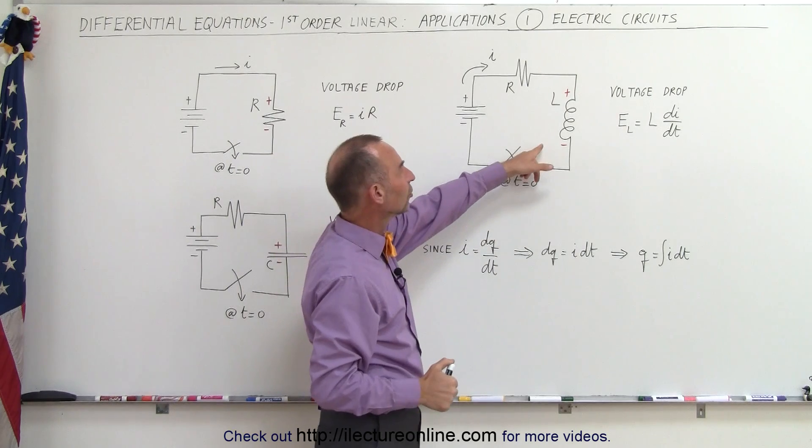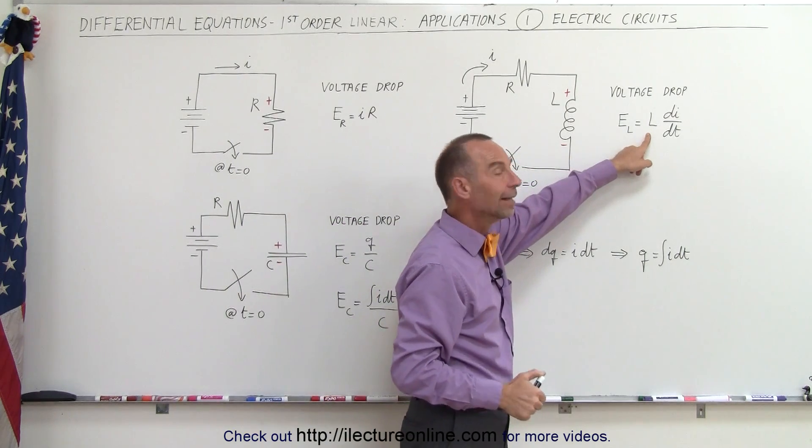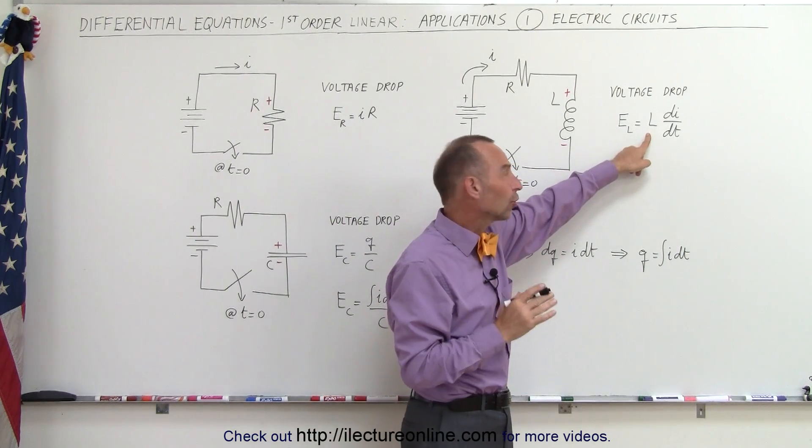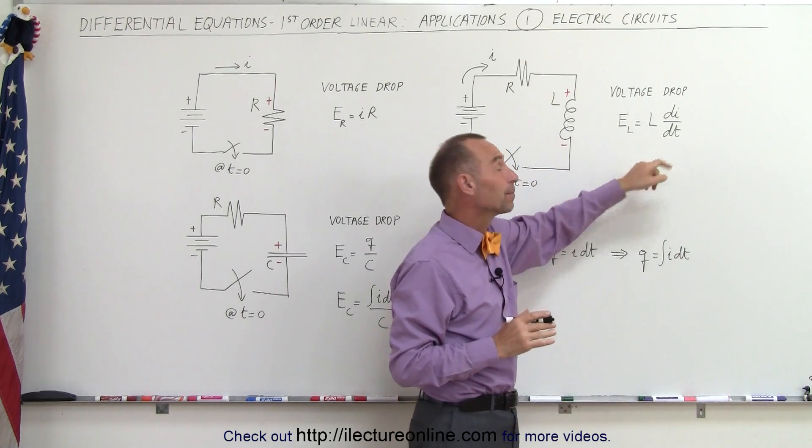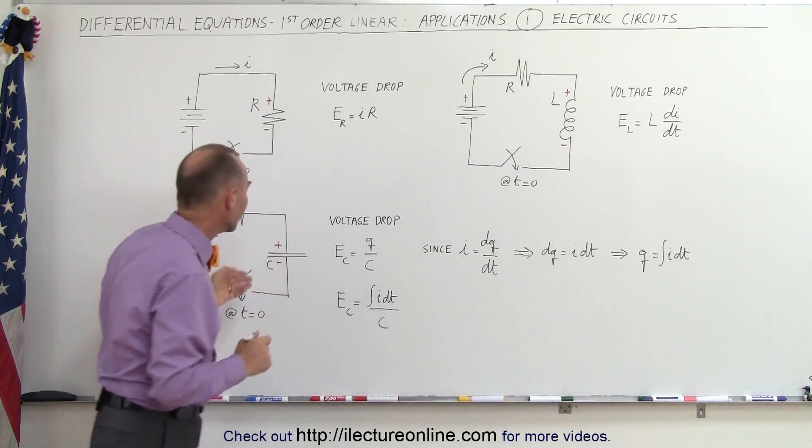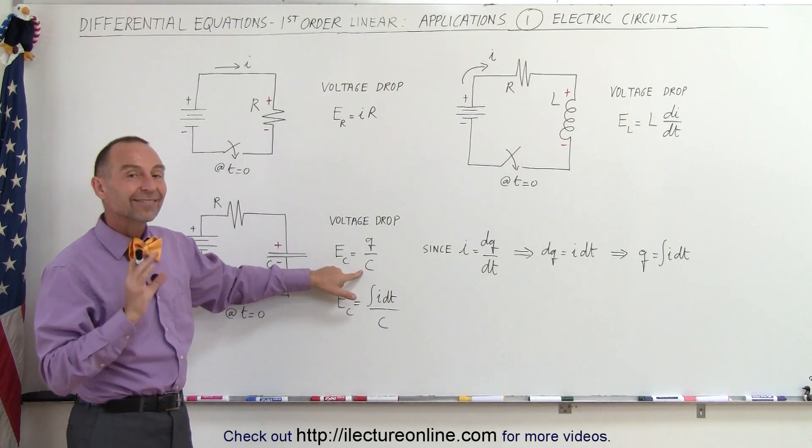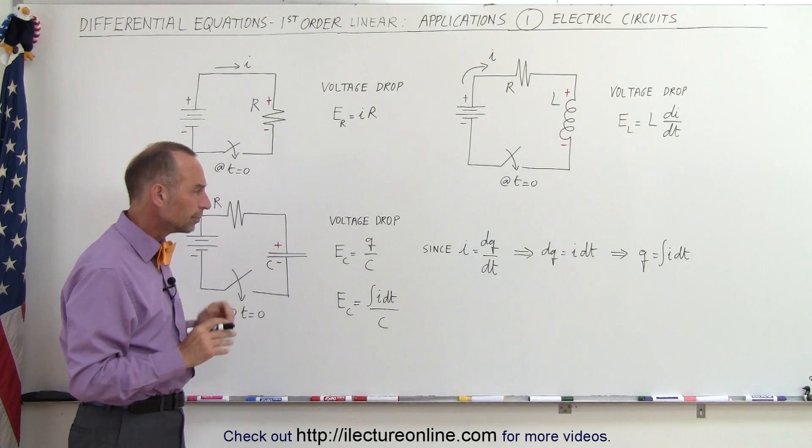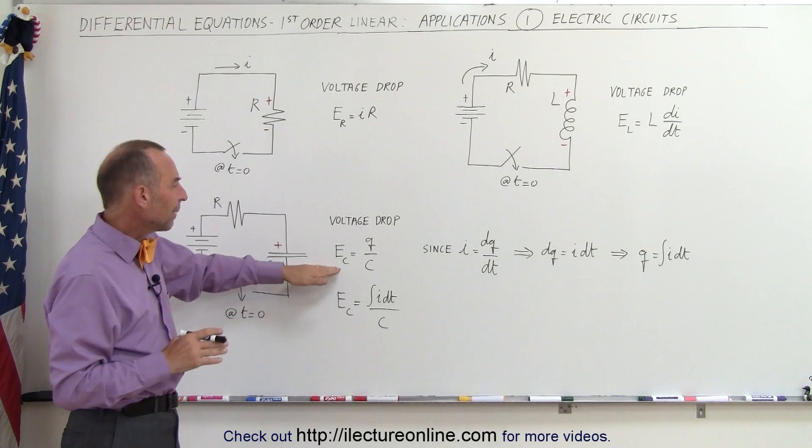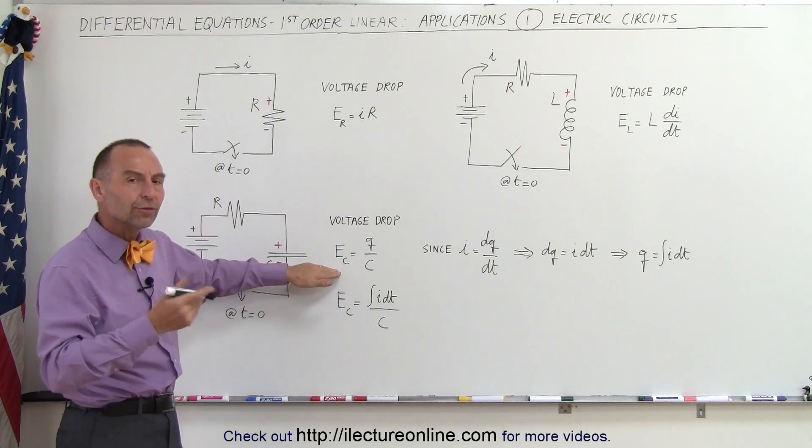In the case of inductors, it is equal to the inductance L times the change of current with respect to time, di/dt. In the case of capacitors, it's equal to the charge Q on the capacitor divided by the capacitance C. Now, in the case of capacitors, we want to write it in terms of the current.